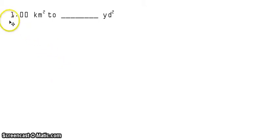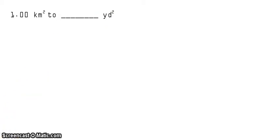For this example, we have 1.00 square kilometers and we need to convert that into the corresponding amount in square yards. So we go immediately to what is given, which is 1.00 square kilometers and we need to have the value in square yards.